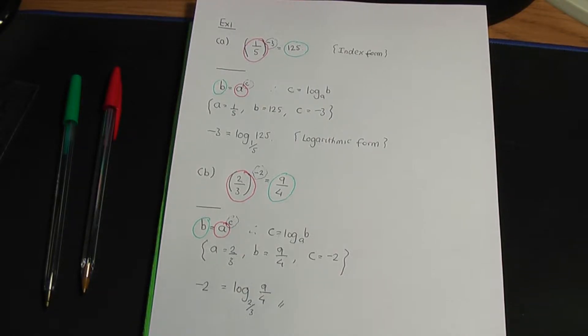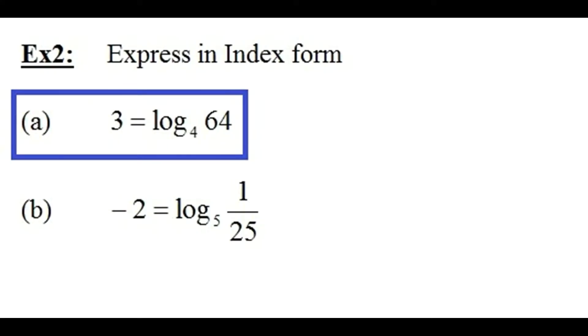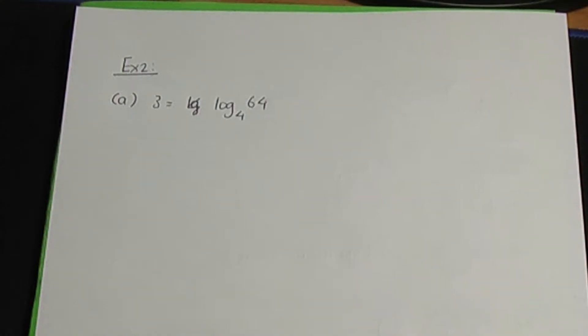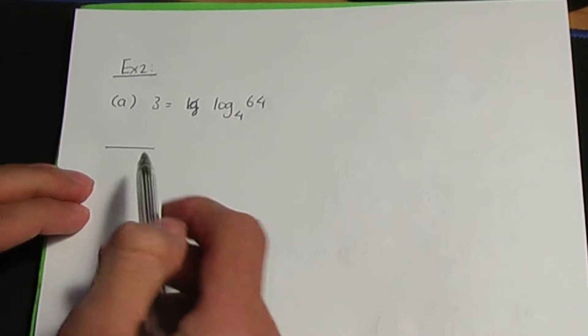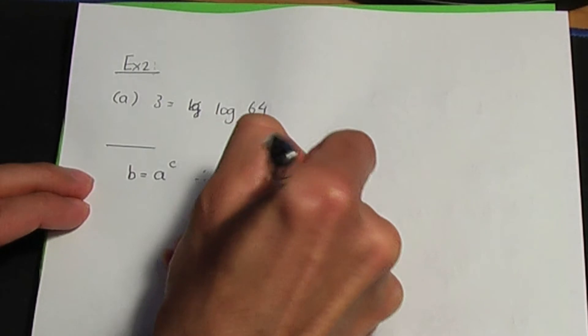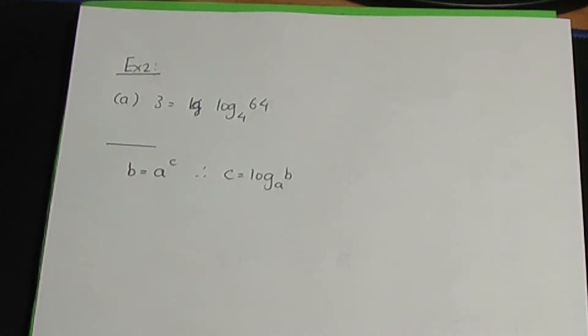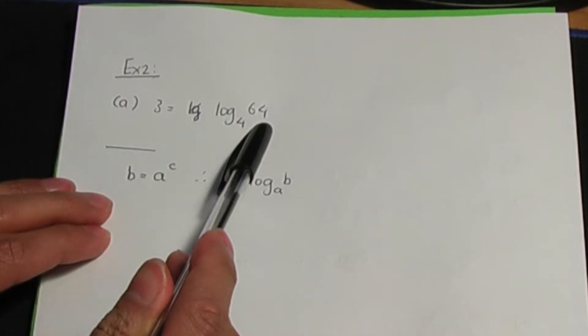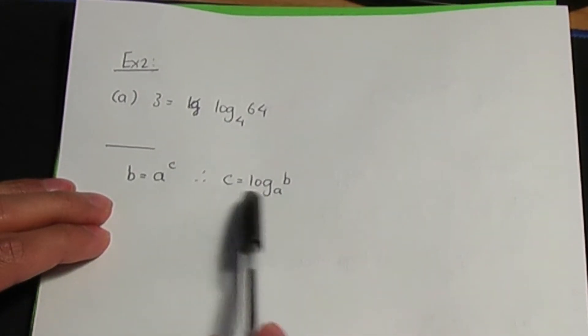I have another example. In example two, part a, we need to express in index form this equation which is in logarithmic form: three is equal to log of 64 to the base of four. Back to the paper and pen. Here is the equation in logarithmic form: three is equal to log of 64 to the base of four. As I did with the previous example, let me write down the relation: if b is a to the c, then c is log b to the base of a. I'll make the comparison of this equation, which is in logarithmic form, with the part of the relation which is in logarithmic form also.